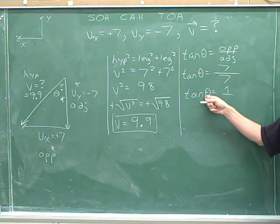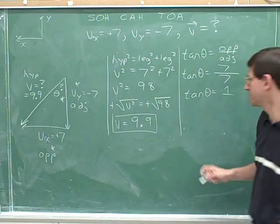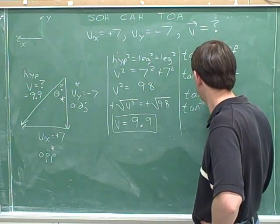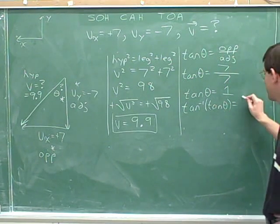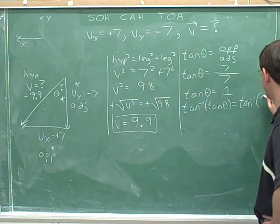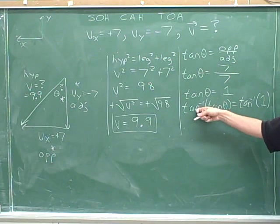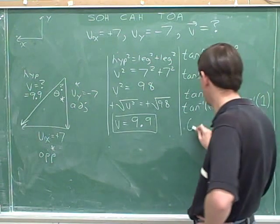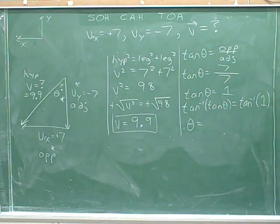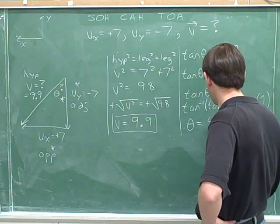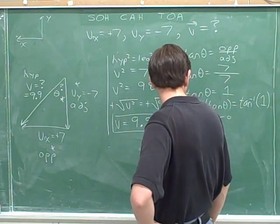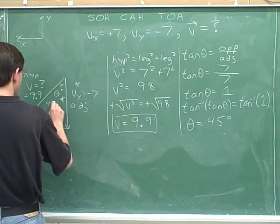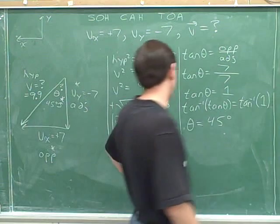Now, to get theta by itself, we have to remove the tangent function by using the inverse tangent. And if we're going to take the inverse tangent of the left, we must take the inverse tangent of the right. That's the way algebra works. If you start with theta and take the tangent and then take the inverse tangent, you go back to where you started, which was theta. And we can use our calculator to find the inverse tangent of 1, which is 45 degrees. So this angle is 45 degrees.